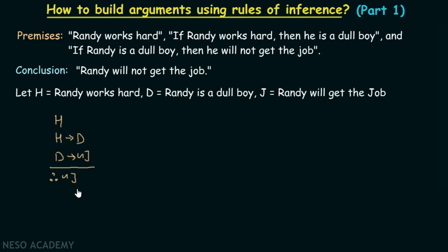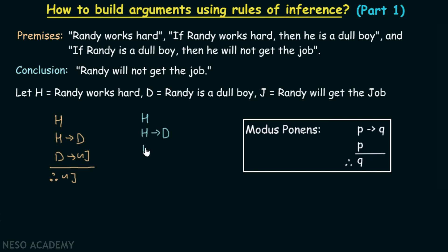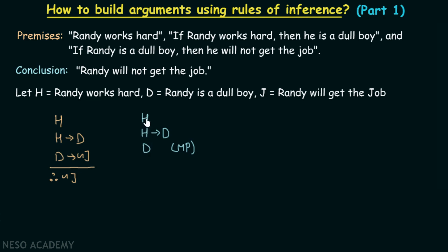To apply rules of inference, we need to take two premises at a time. For example, we can take H and H implies D, and apply modus ponens to conclude D. Conclusion D can be obtained from these two premises by using the rule of modus ponens.